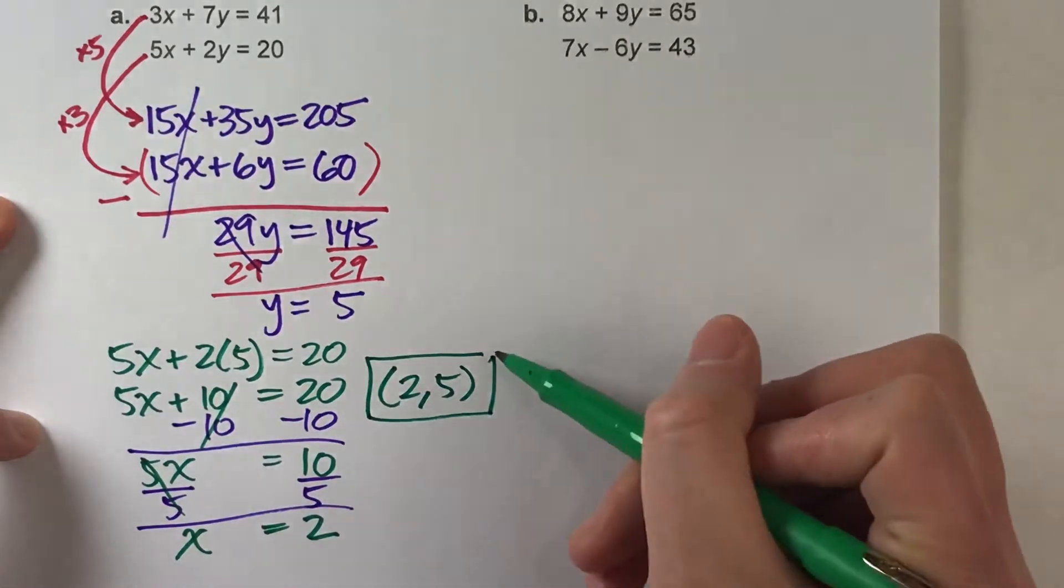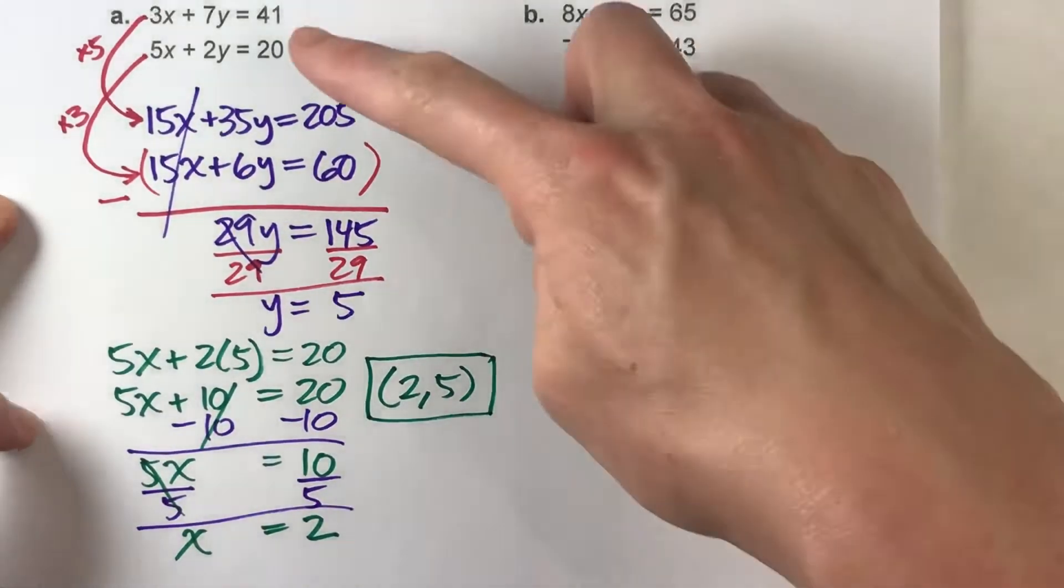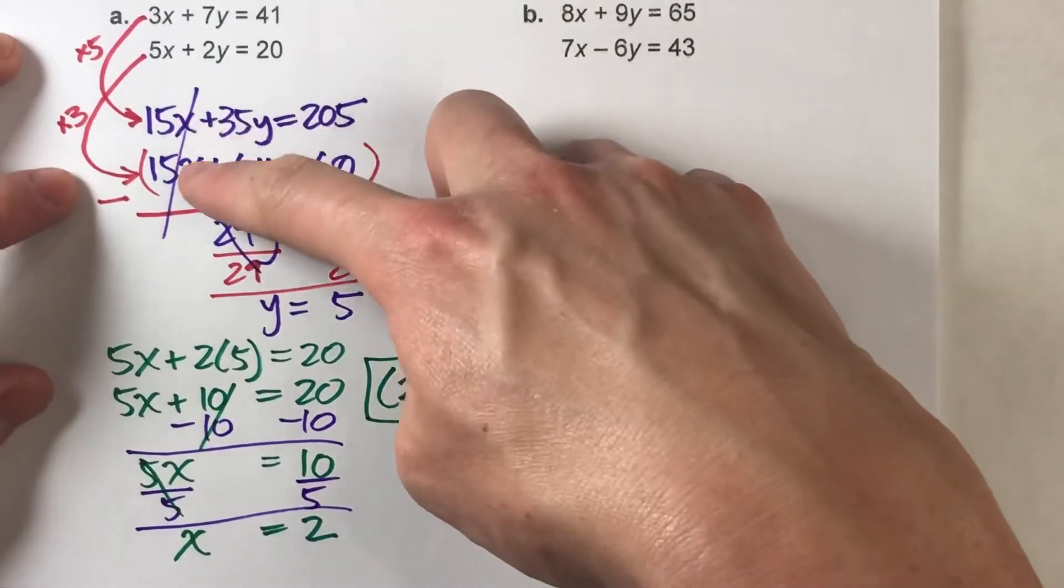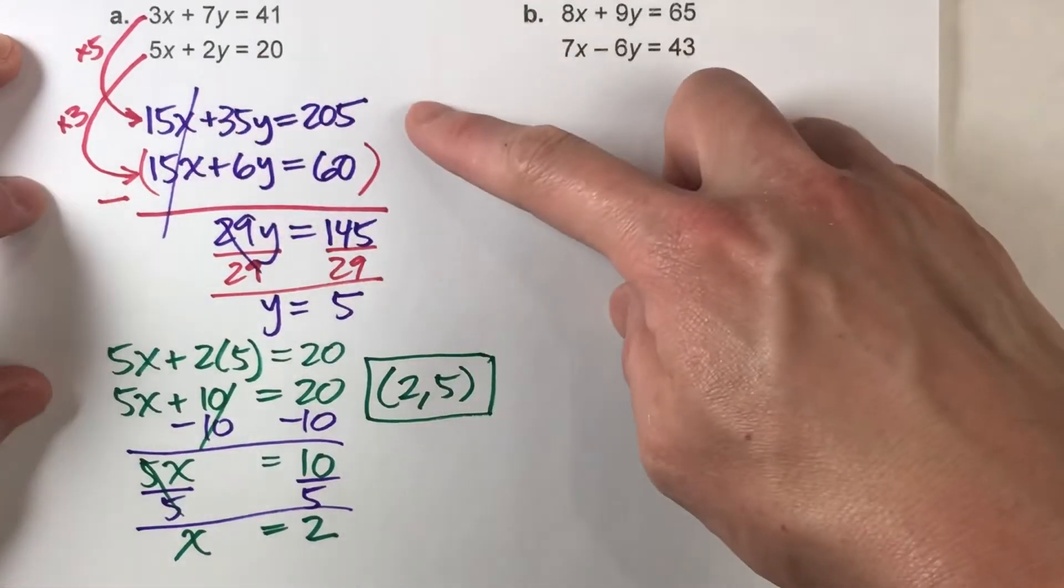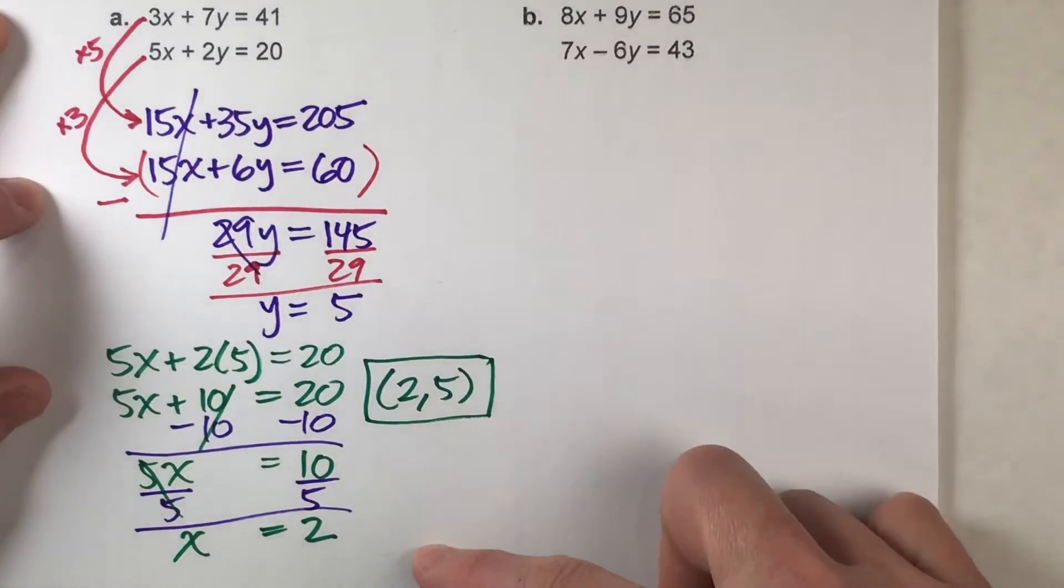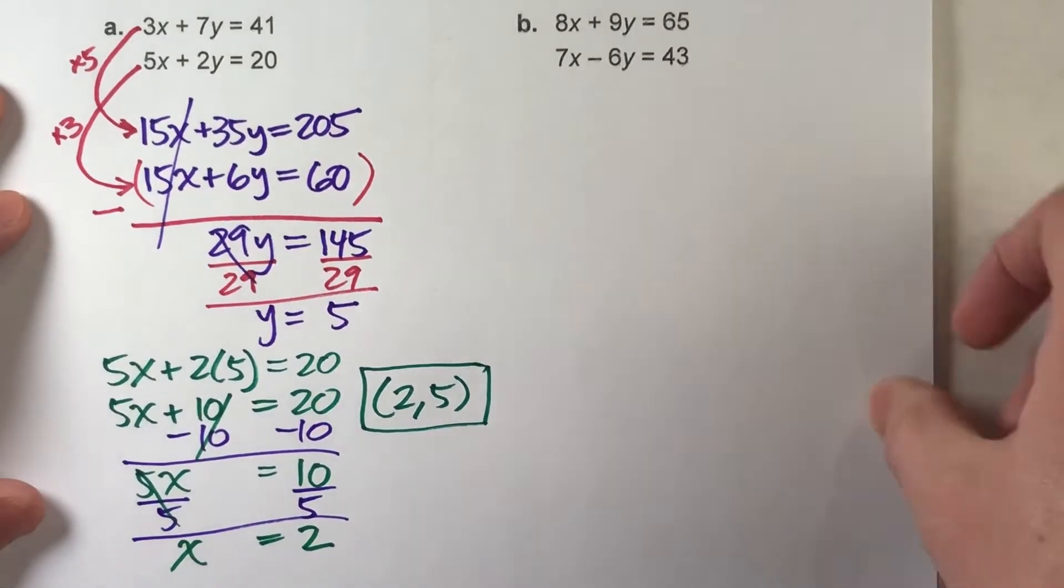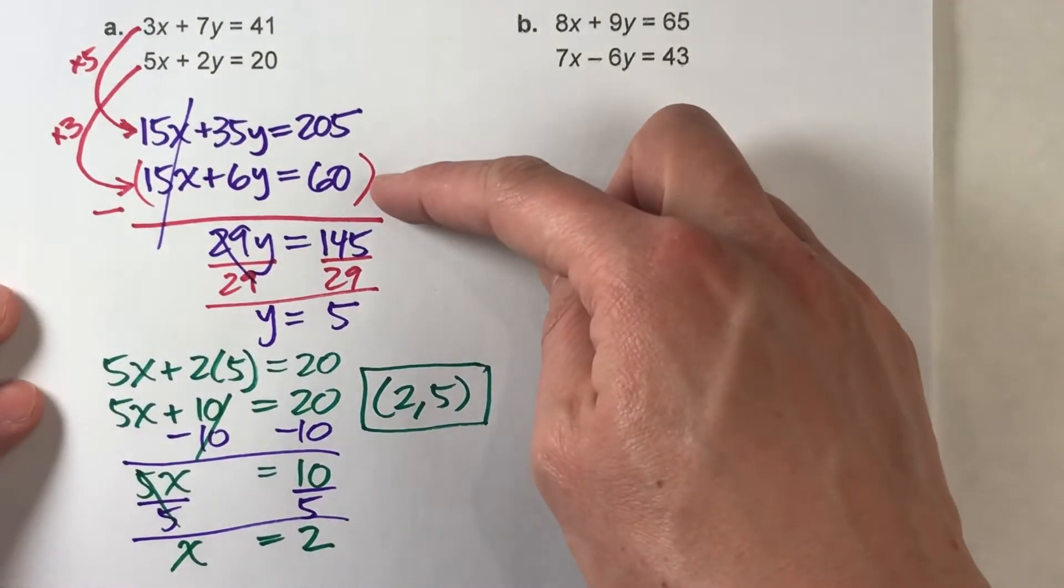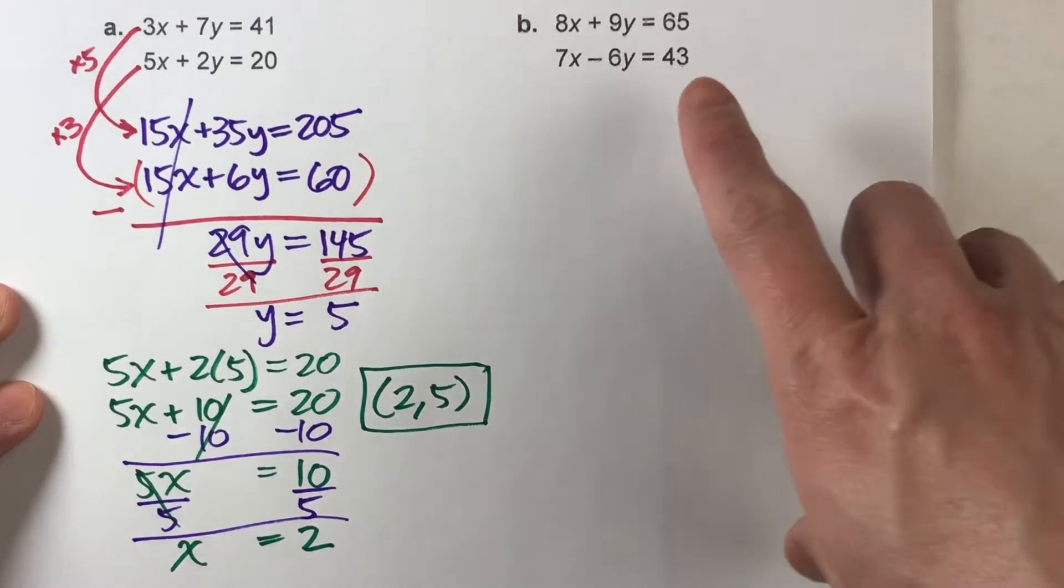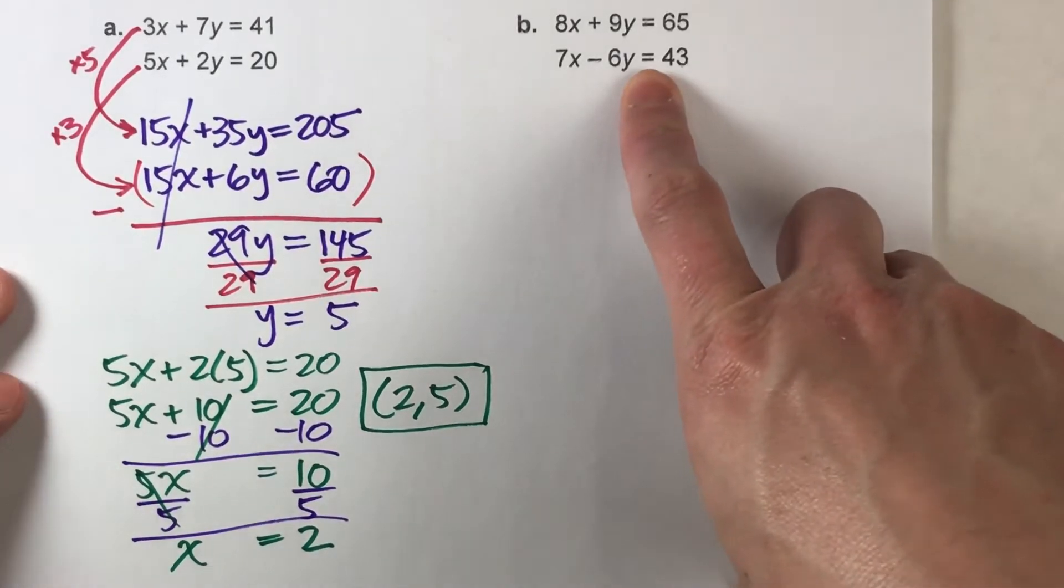So notice, after we've multiplied both equations by a number to get a number in front of x to match up, now it's just solving it like we've done before. And there's lots of video links down below that you can check out to see those other kinds. So I've got one more example for you over on the side.